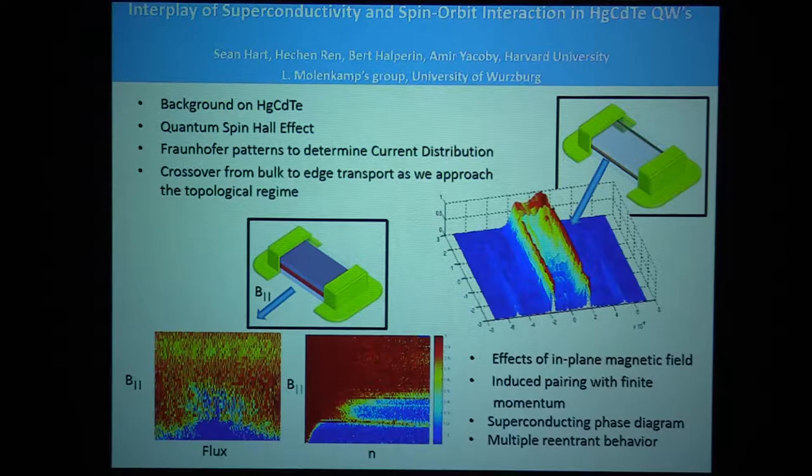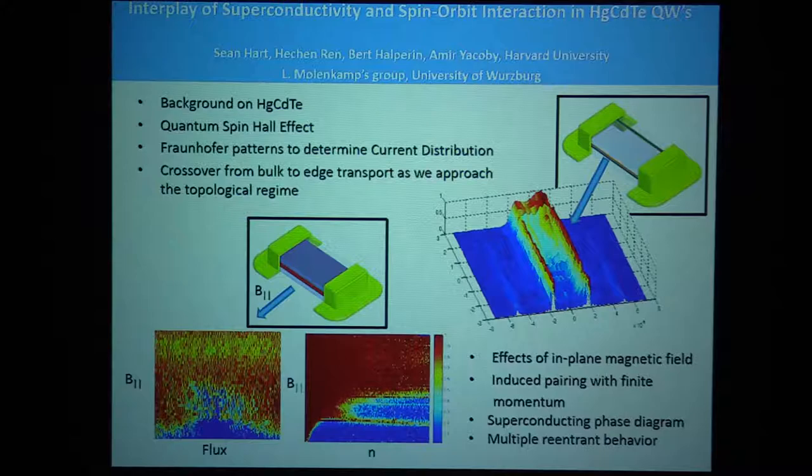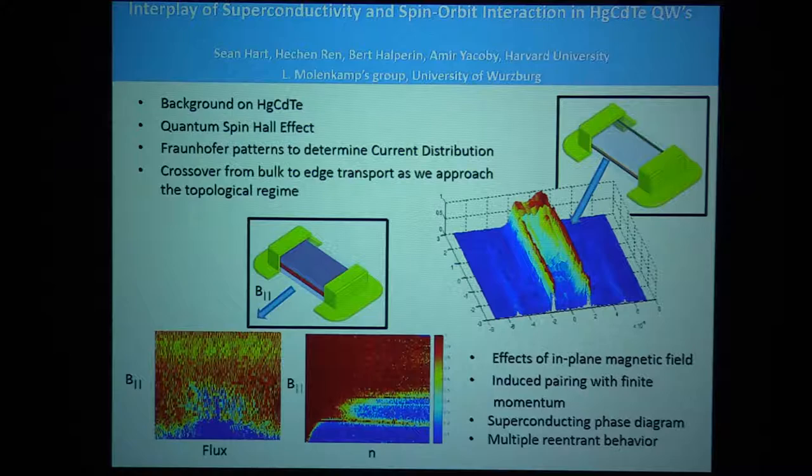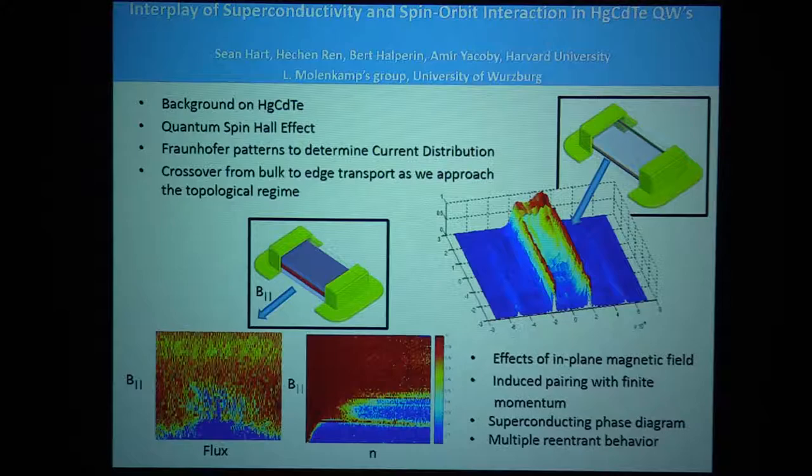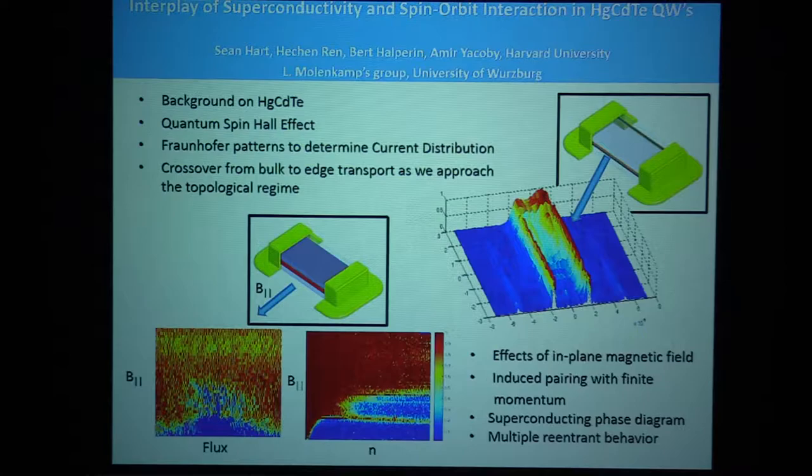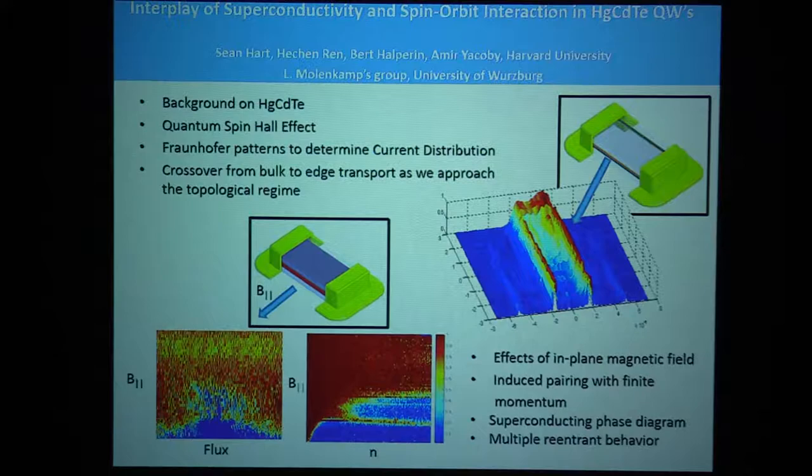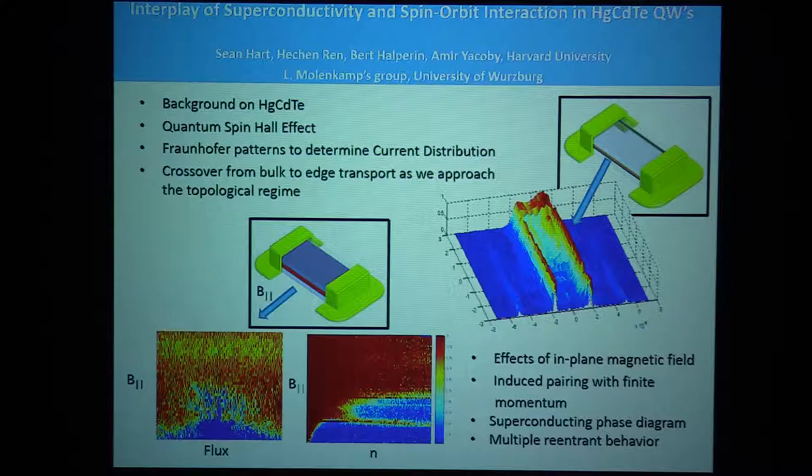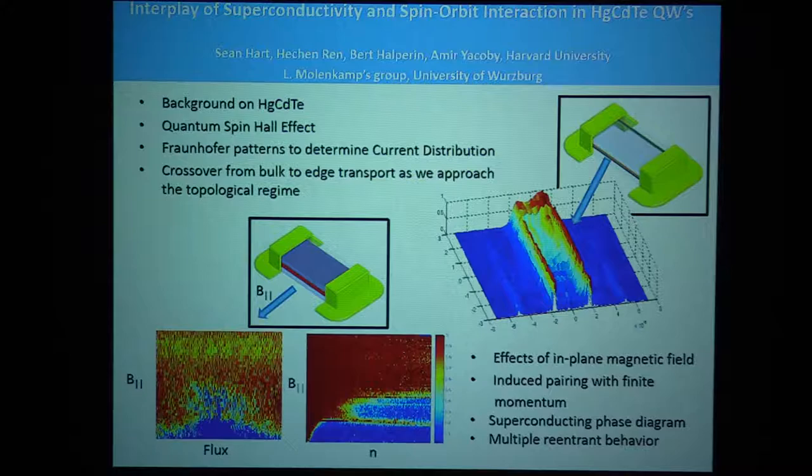Of course, transport measurements are not a very direct way of determining that current is confined to the boundaries of the sample, which is what we expect for a topological insulator. So I'll then introduce a different method, the method that we've started working on approximately a year ago that's very suitable for two-dimensional systems in particular in order to see the crossover from uniform flow inside the topological insulator when the chemical potential is in the conduction band to edge transport when the system enters into the topological gap. This will probably cover most of the first talk.